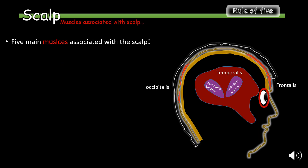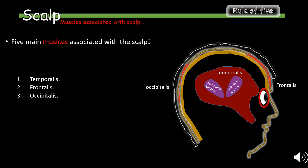Last but not least, we will discuss the muscles of the scalp. There are five main muscles associated with the scalp: the temporalis muscle, the frontalis muscle, the occipitalis muscle, the auricularis muscle, and the orbicularis oculi muscle.